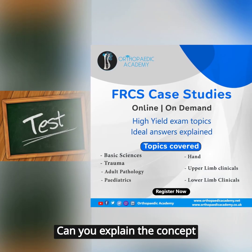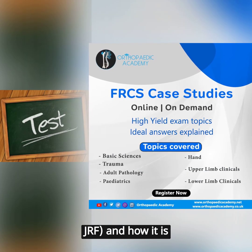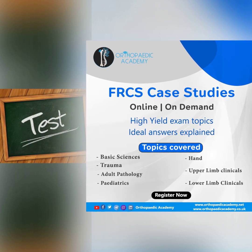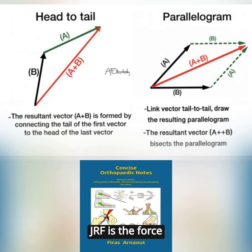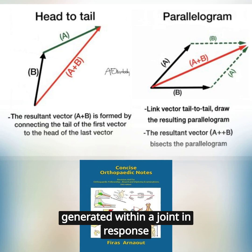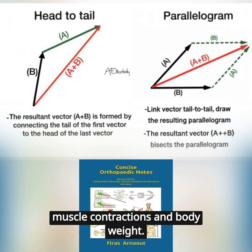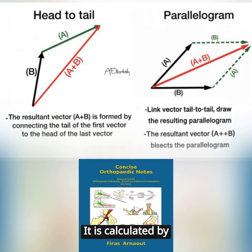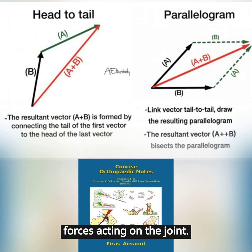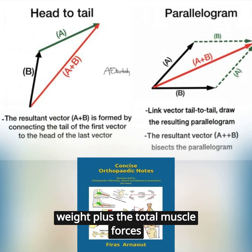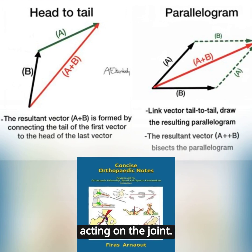Can you explain the concept of joint reaction force, JRF, and how it is calculated? JRF is the force generated within a joint in response to external forces, muscle contractions, and body weight. It is calculated by taking the vector sum of all the forces acting on the joint. In the case of the hip joint, for example, the JRF is equal to the body weight plus the total muscle forces acting on the joint.